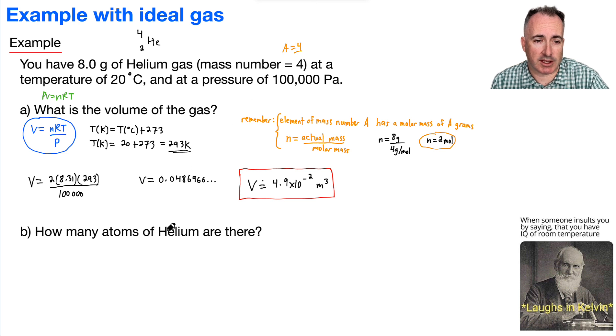Now how do we actually get the atoms of helium? We can use this equation from your data booklet, which is n equals capital N over NA. Because we want the number of atoms, that means we want capital N, which is just going to be the number of moles times Avogadro's number.